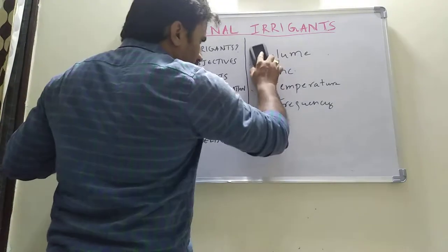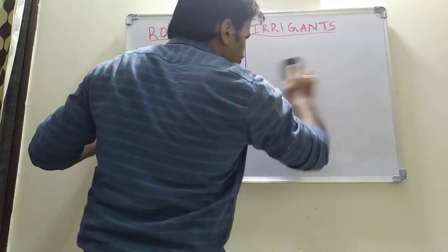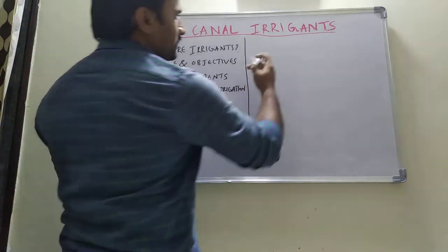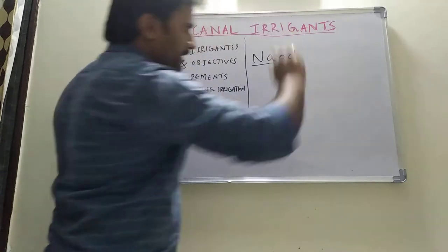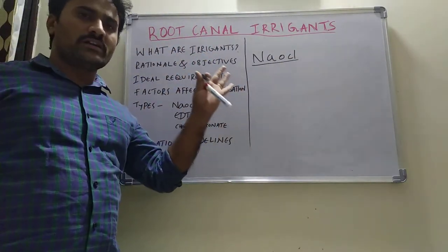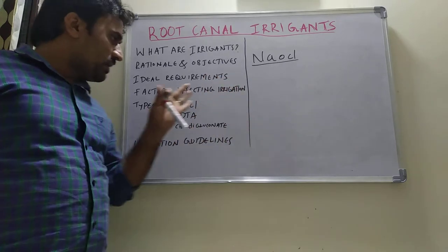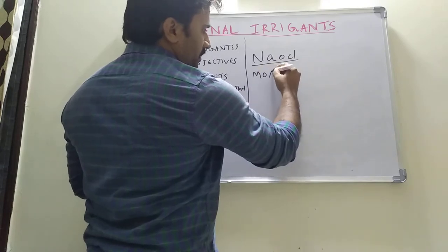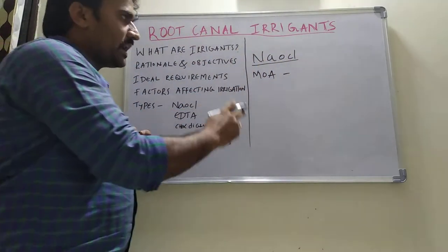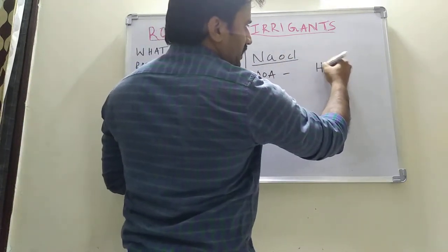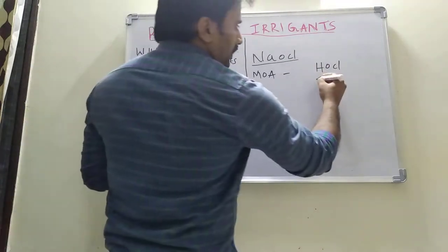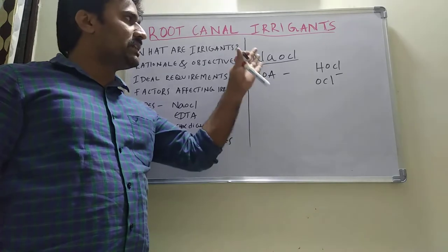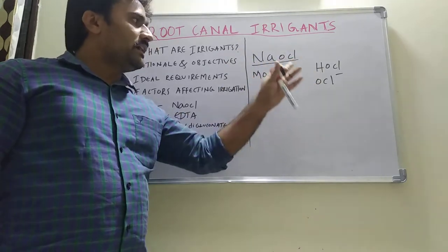The three commonly used types of irrigants are sodium hypochlorite, EDTA, and chlorhexidine digluconate. Sodium hypochlorite is a reducing agent, a clear straw-colored fluid, and the most commonly used irrigant. Its mechanism of action: on ionization, it produces hypochlorous acid (HOCl) and hypochlorite ion (OCl⁻), which are the two products responsible for its antimicrobial activity.